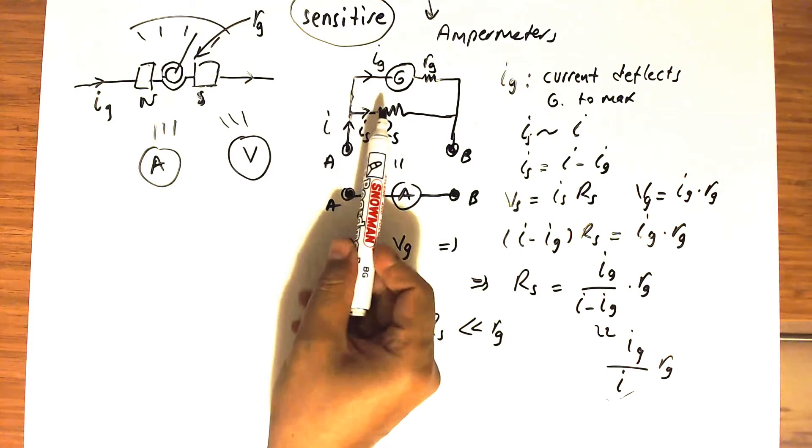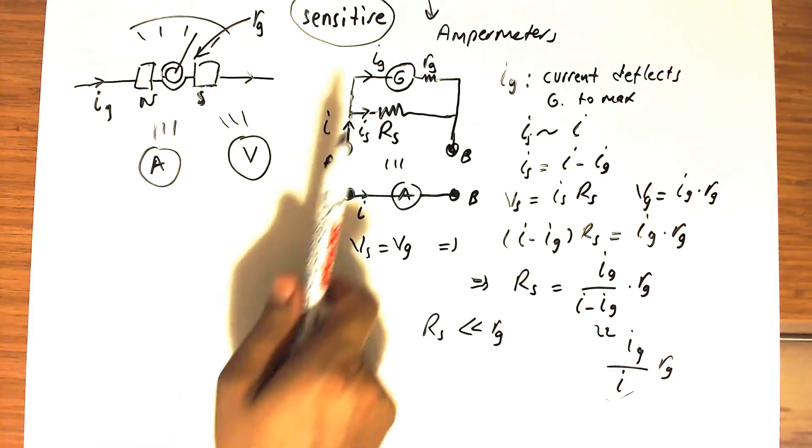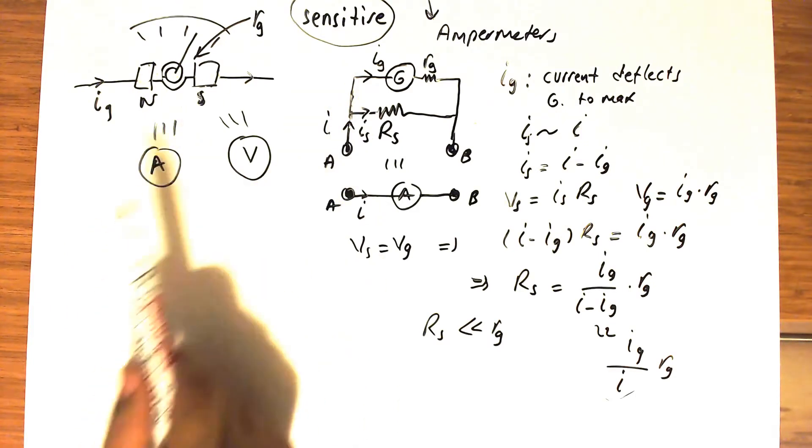The other way to use the galvanometer to measure in DC circuits is to use the galvanometer as a voltmeter.